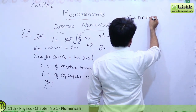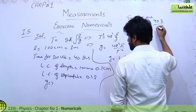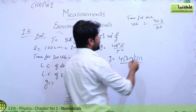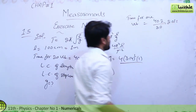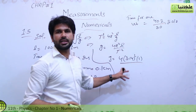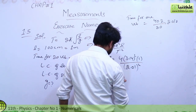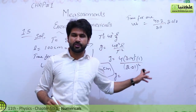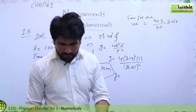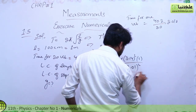For time per one vibration: 40.2 divided by 20 gives 2.01 seconds. This is the time for one vibration. Now we calculate g: (4 × 3.14² × 1) divided by (2.01²). When we solve this on the calculator, the value of g comes out to be 9.76 meters per second squared.